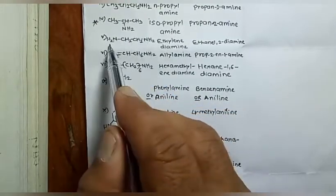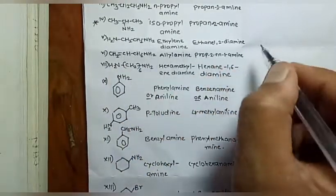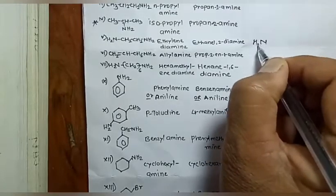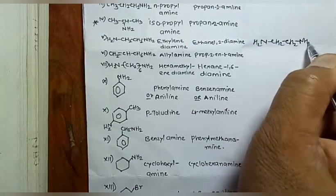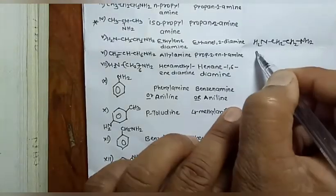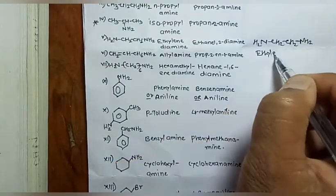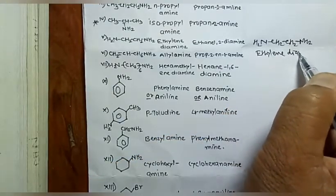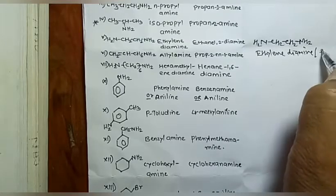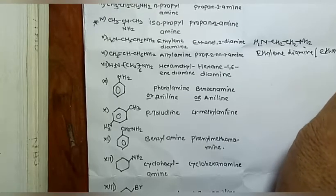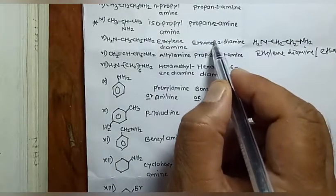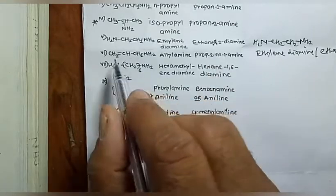If there are two amino groups, for example NH₂CH₂CH₂NH₂, the common name is 'ethylenediamine' and the IUPAC name is also 'ethane-1,2-diamine'.